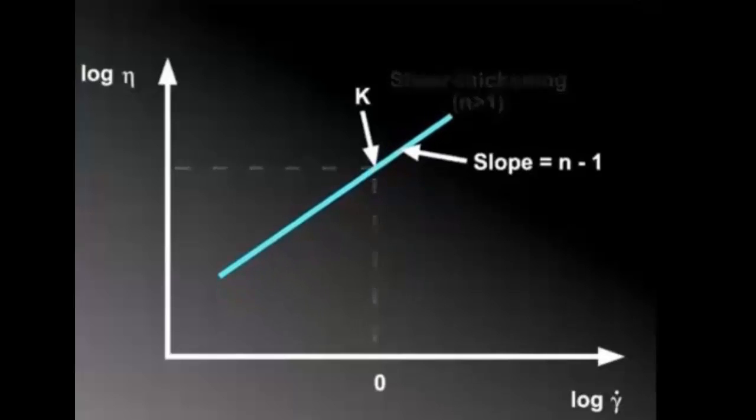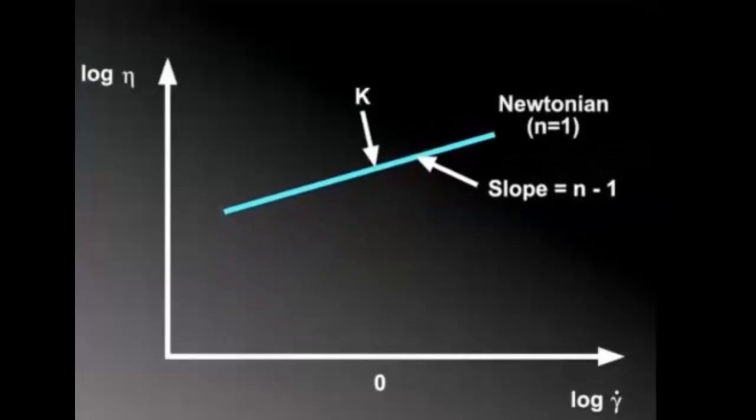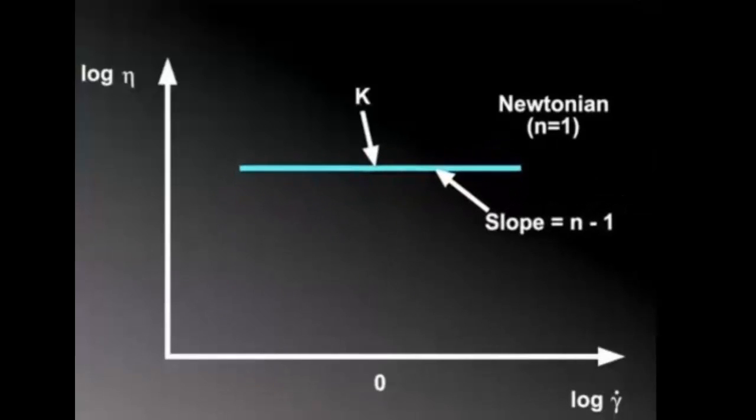If n equals 1, the fluid is Newtonian since there is no dependency of the viscosity on the shear rate. The line is horizontal since the slope, n minus 1, is equal to 0.